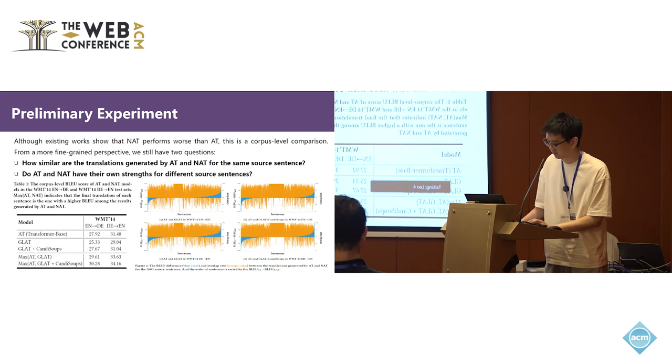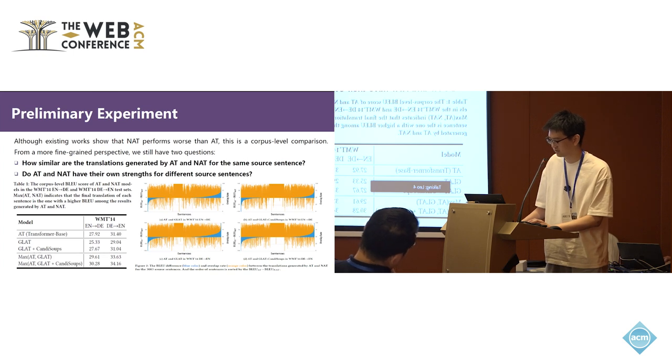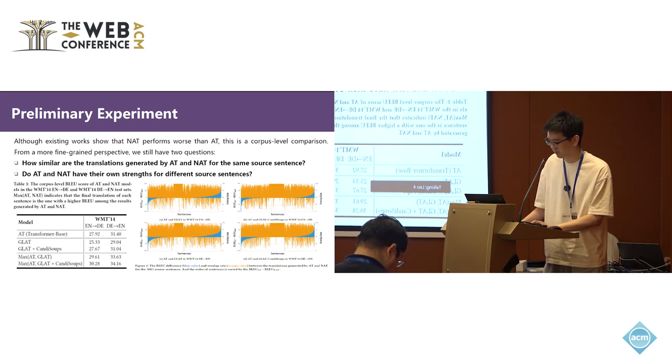which further verifies the complementarity between AT and NAT. The orange part shows that the overlap rate between most translations is very high, exceeding 75%. This experiment's result shows that there is complementarity and high similarity between the AT and NAT translations, which provides the possibility to merge these two modes.